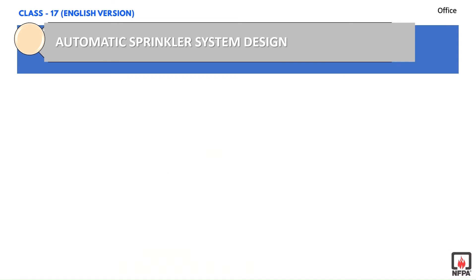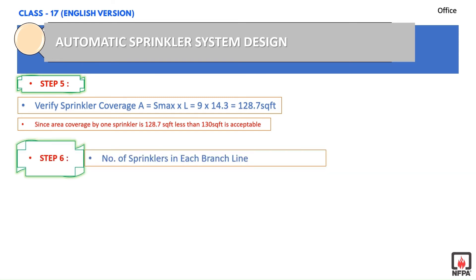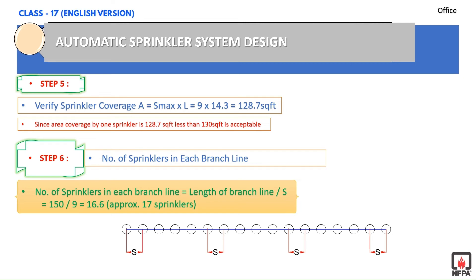Continuing Step 5, we cross-verify the coverage area of one sprinkler using the same formula. We get approximately 128.7 square feet. Since 128.7 square feet is less than 130 square feet, our considerations are acceptable. Step 6: We calculate the number of sprinklers in each branch line by dividing the length of the branch line — 150 feet — by the maximum distance between sprinklers. By this formula, we identify 17 sprinklers in one branch line.